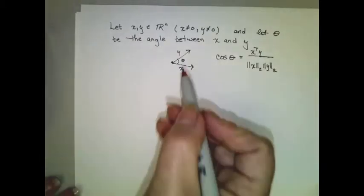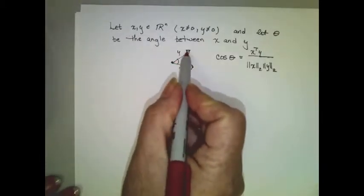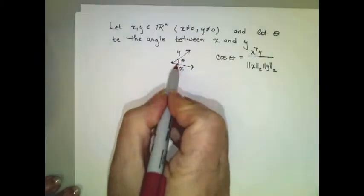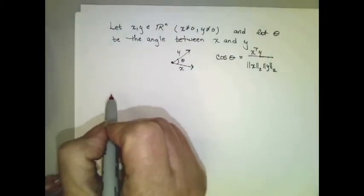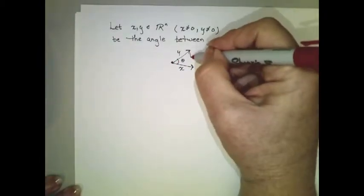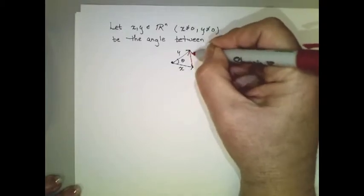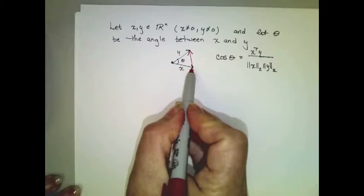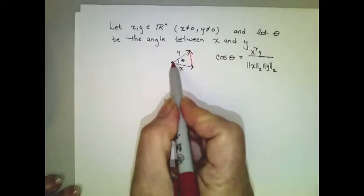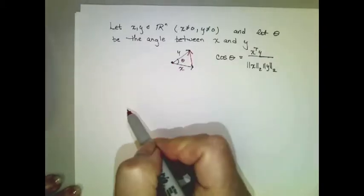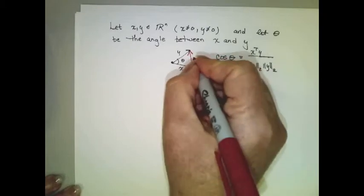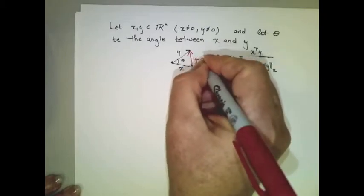So first of all, we know that x and y are non-zero vectors, and the angle between them is theta. So I'm going to draw a triangle by creating another vector for the third side of the triangle like such. Now, notice that vector x plus this new vector actually results in vector y if we add them, which means this new vector must be y minus x.